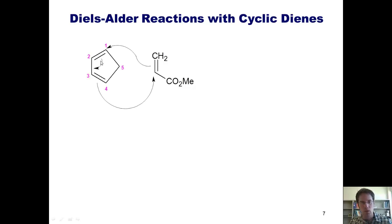These electrons swing over here to form a carbon-carbon double bond between 2 and 3, and these electrons flip out here to form a carbon single bond between here and carbon 4. That ultimately provides this product.